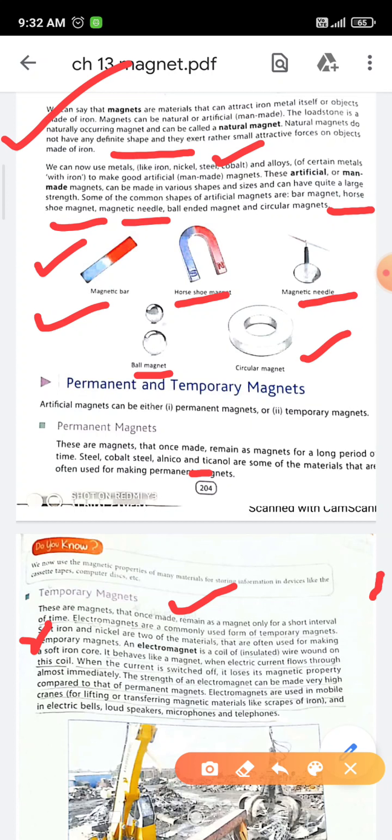Electromagnets are used in mobile cranes for lifting or transferring magnetic materials like scraps of iron, and in electric bells, loudspeakers, microphones, and telephones. Thank you.